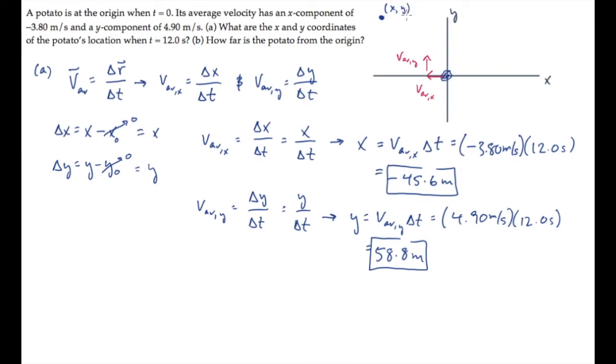Part b asks us to find the distance from the origin to that location. We can construct a right triangle with legs of length x and y, the components of the displacement. The hypotenuse, then, is the distance r that we're trying to find. We can find this using the Pythagorean theorem. r squared equals x squared plus y squared. Take the square root and substitute the known values, calculating to find that it equals 74.4 meters.